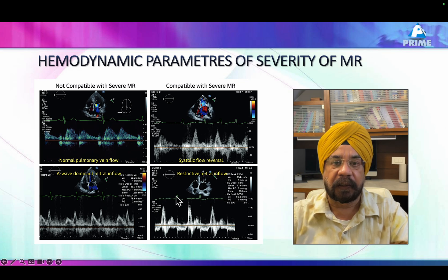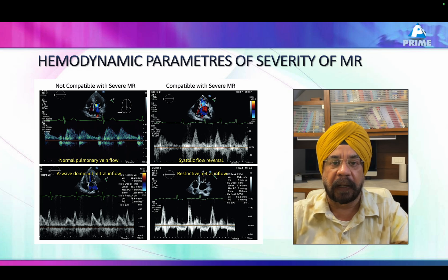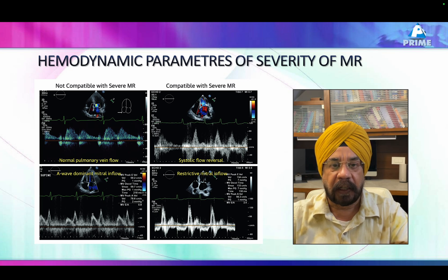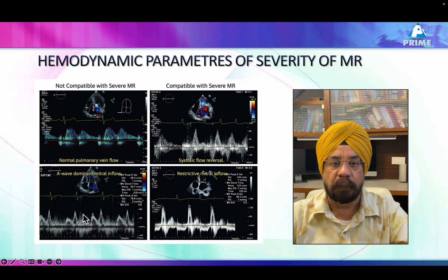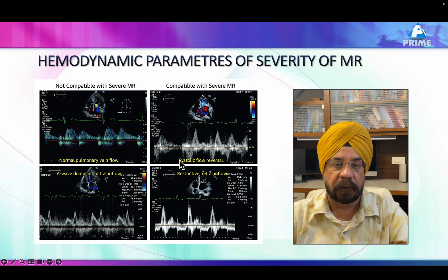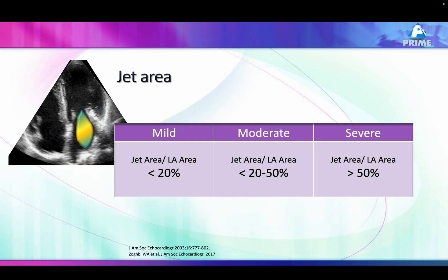The second point: once you have mitral regurgitation, a large quantity of blood goes back into the LA. So during the next beat, large blood comes back through the LV inflow from LA to LV. You would therefore expect a very large E wave. So if you don't get a large E wave — instead getting A greater than E — this again practically rules out severe mitral regurgitation.